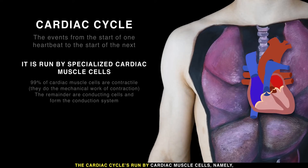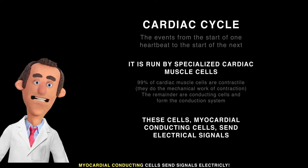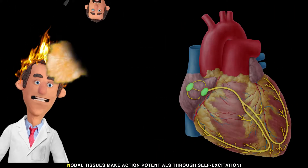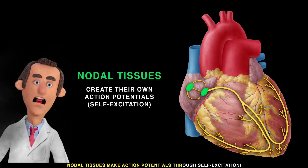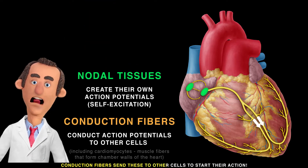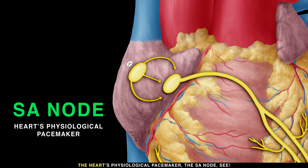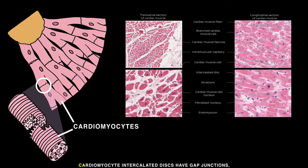The cardiac cycle is run by cardiac muscle cells, namely myocardial conducting cells that send signals electrically. Not all tissues make action potentials through self-excitation — conduction fibers send these to other cells to start their action. The heart's physiological pacemaker is the SA node, and its impulses are conducted to cardiomyocytes.